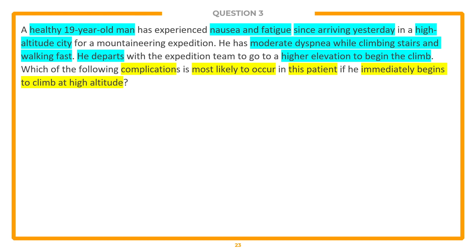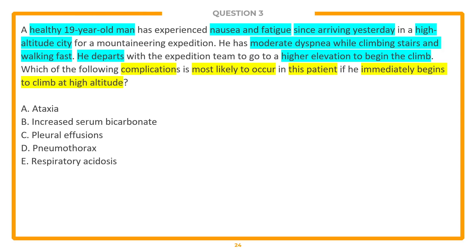We've got five answer choices. I'm going to start at the bottom and work my way up: answer choice E, respiratory acidosis; D, pneumothorax; C, pleural effusions; B, increased serum bicarbonate; and A, ataxia.